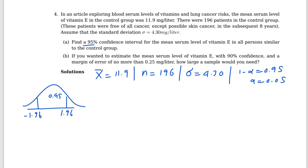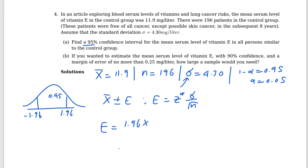Part A asks for the confidence interval. Since sigma is known, the confidence interval is x-bar plus or minus E, where E equals z-star times sigma over root n. Let me find the margin of error E. z-star equals 1.96, sigma equals 4.30, and n equals 196. So E equals 1.96 times 4.30 divided by the square root of 196, which gives 0.602.